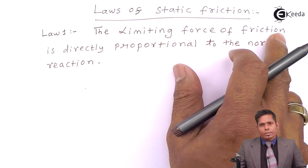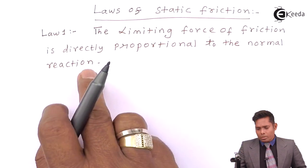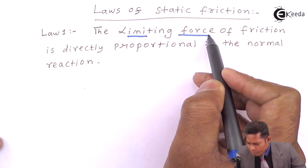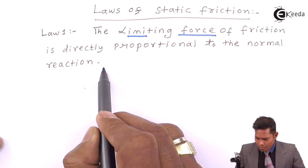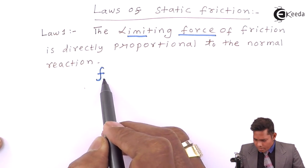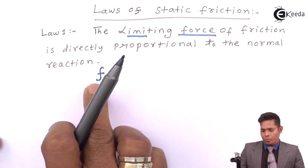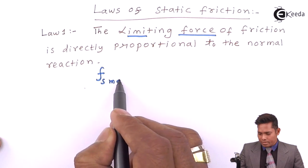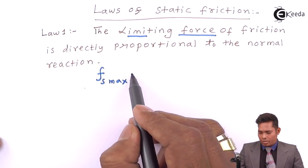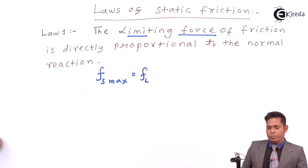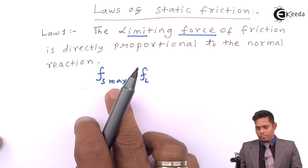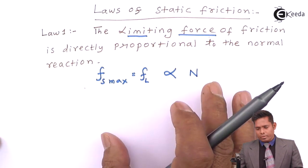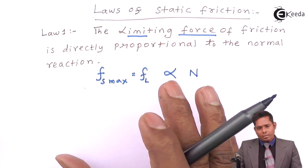The limiting force of friction is directly proportional to the normal reaction. The limiting force of friction is written as Fs — force of static friction. I call this as the limiting value, it is the maximum value, Fs max. Sometimes you can write this as Fl, that is limiting force of friction. So Fs maximum is directly proportional to normal reaction.